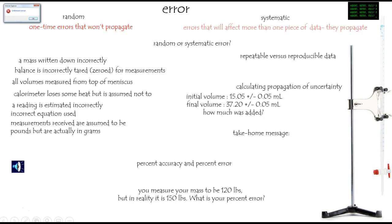But a systematic error is the kind of error where that'll affect some other piece of data. It will propagate and it's typically much more serious. Okay, let's do some examples.